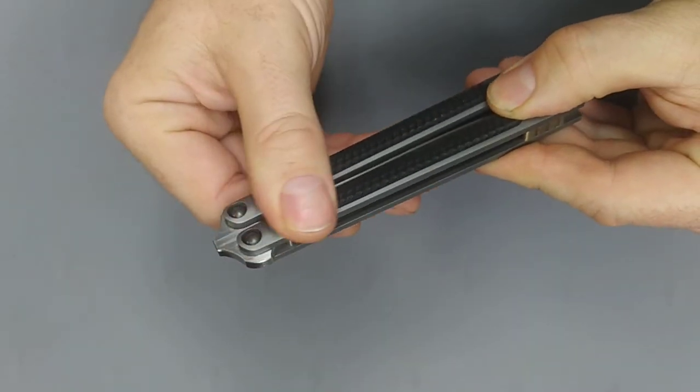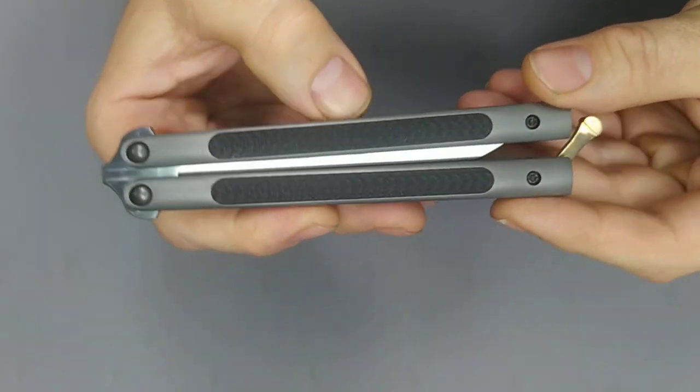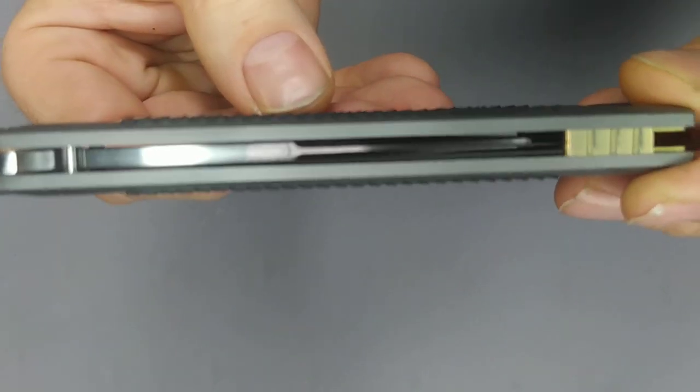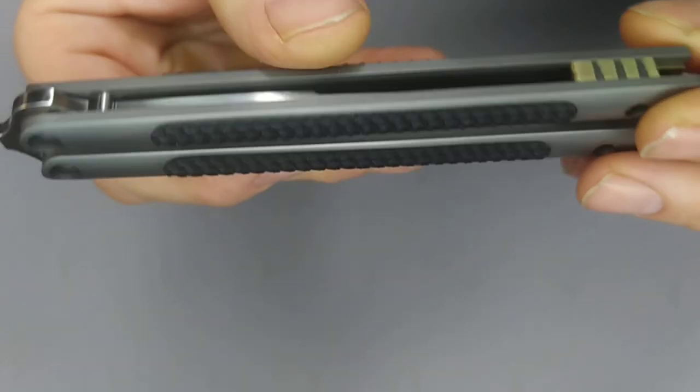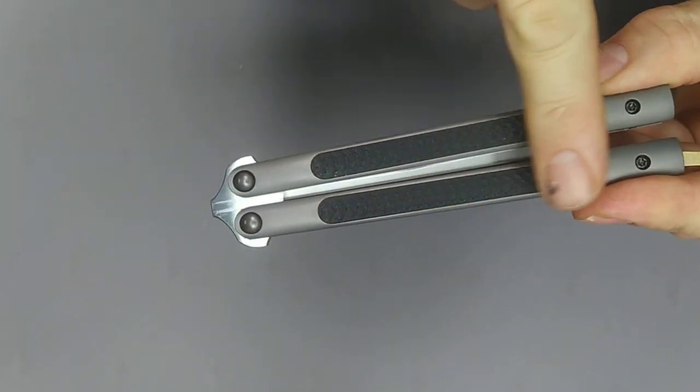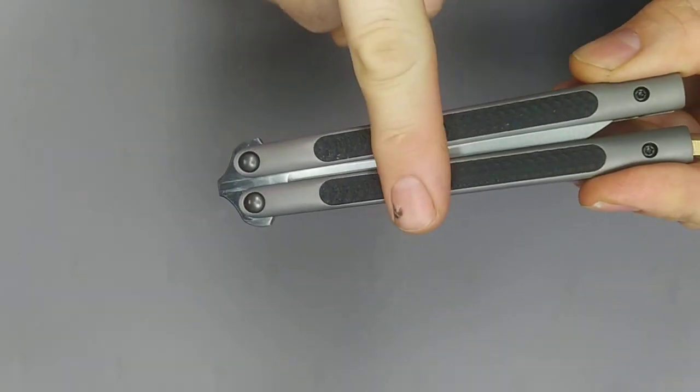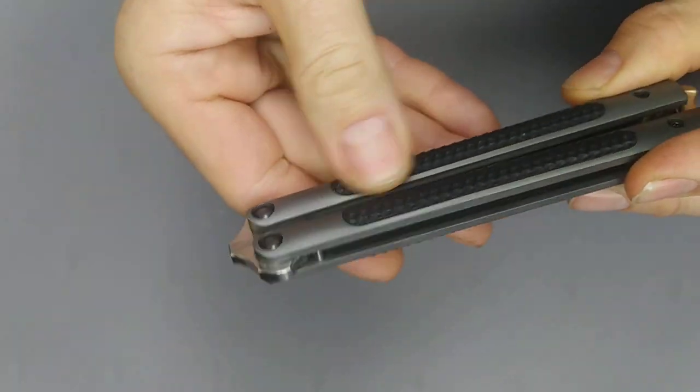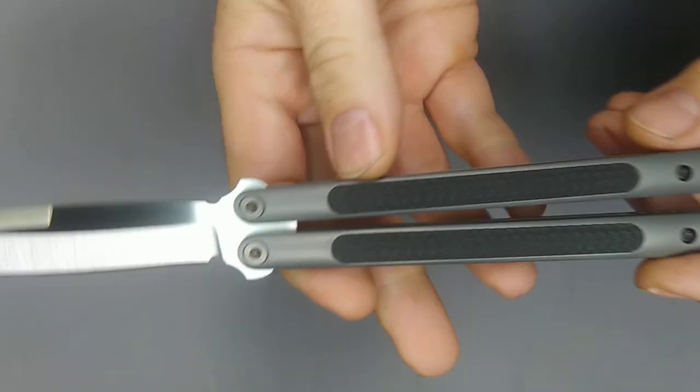This scale pattern, which you can kind of see here, is smooth when you go this direction but very grippy when you go this direction, just like if it was on horny toads or something like that. Look at it real close, you can kind of see it.